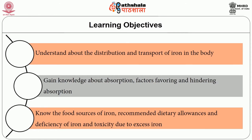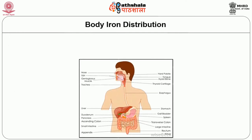Students will also gain knowledge about absorption and the factors favoring and hindering absorption. They will know the food sources of iron, recommended dietary allowances, deficiency of iron, and toxicity caused due to excess iron. Now first let us look into the distribution of iron in our body.